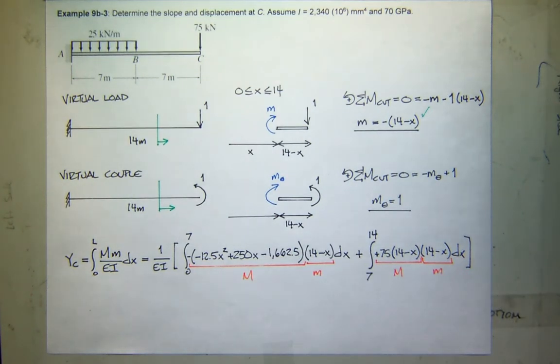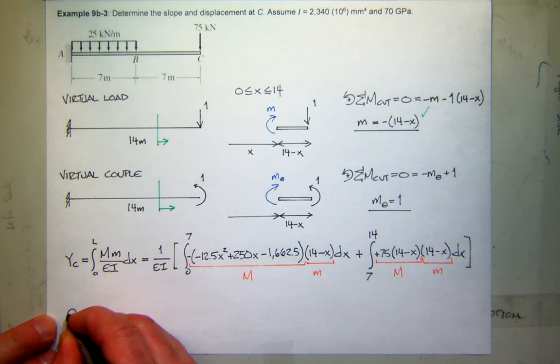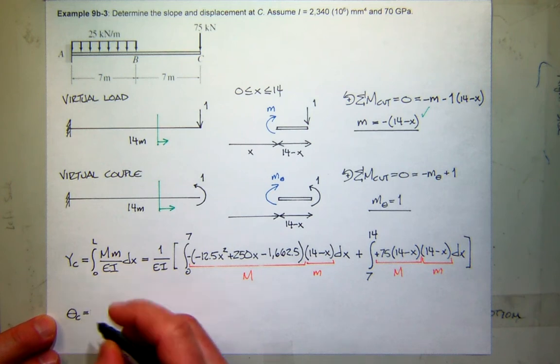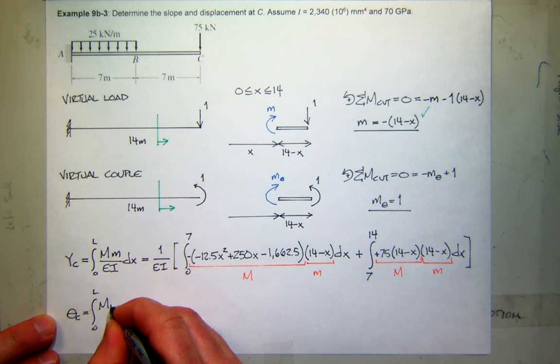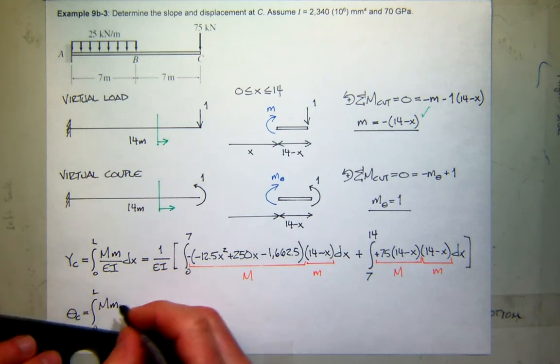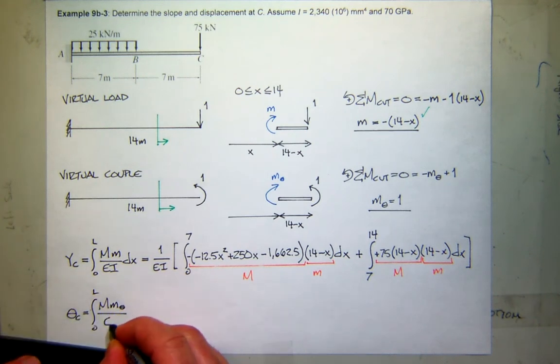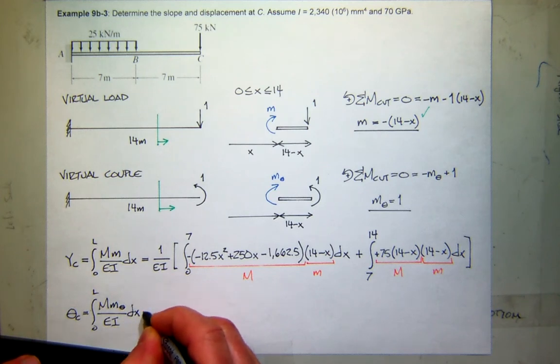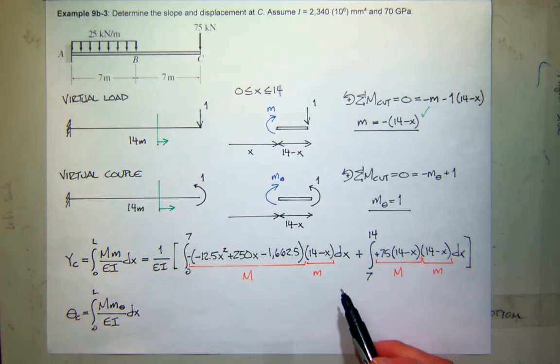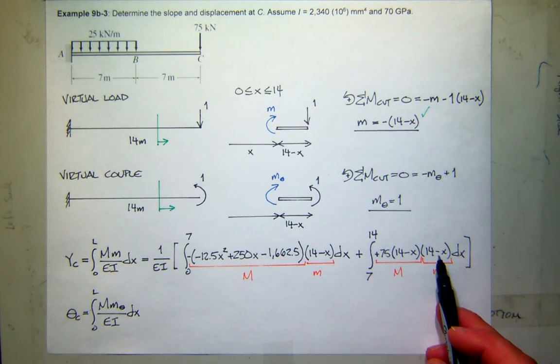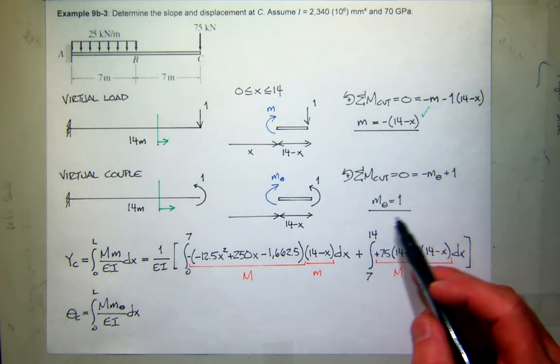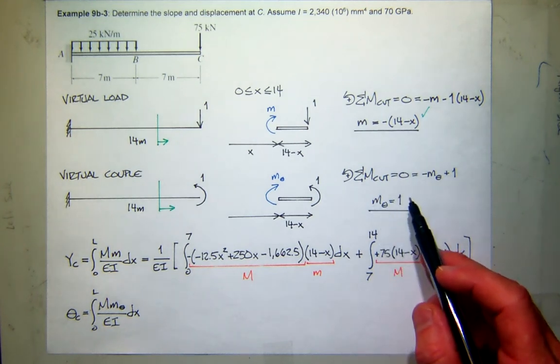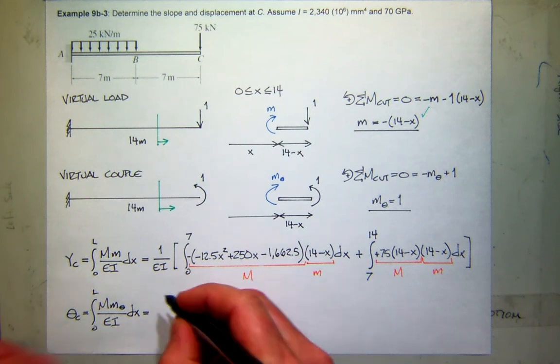So that will change that, and I'll get 14 minus x, and that'll be dx. And then we can close up our bracket. And again, just so you guys can keep track of these, there's the real moment. There's the virtual moment from 0 to 7. You can see our real moment changes, but our virtual moment is unchanged. And again, for the exam, that's good enough. That's what I'm calling the virtual work equation. So the last part of this problem would be, what is the slope at C? Well, the equation looks the same, except the virtual moment is the one due to the couple.